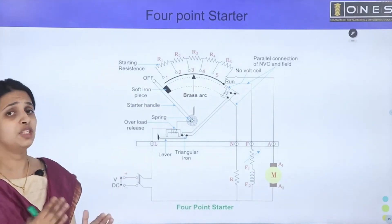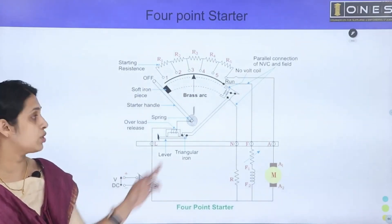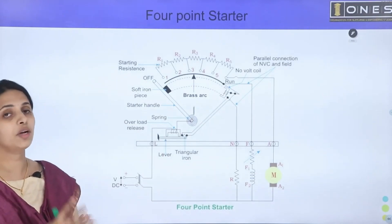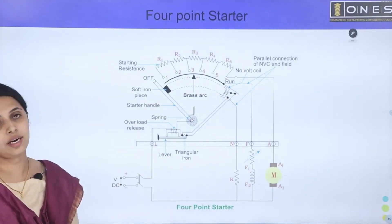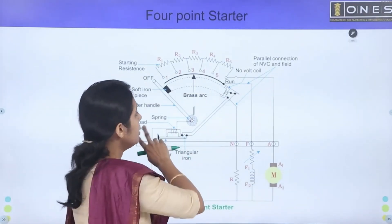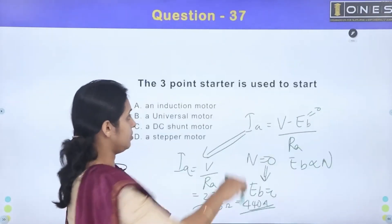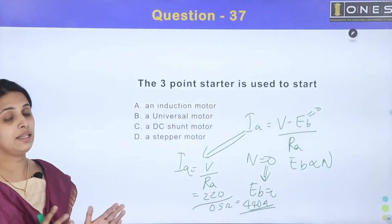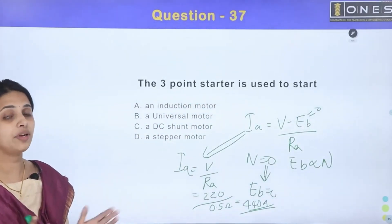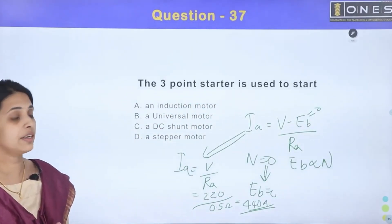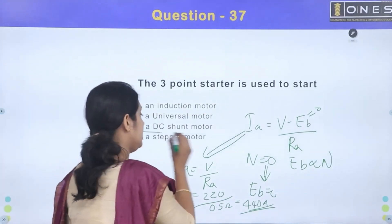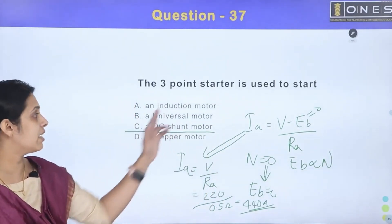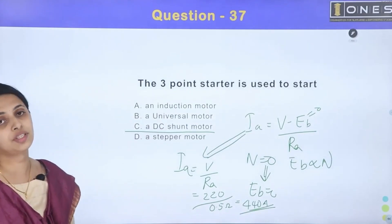The 4-point starter is used when speed control is needed. Normally, 3-point and 4-point starters are used with DC machines, specifically DC shunt machines. The answer to the question is Option C: DC shunt motor.